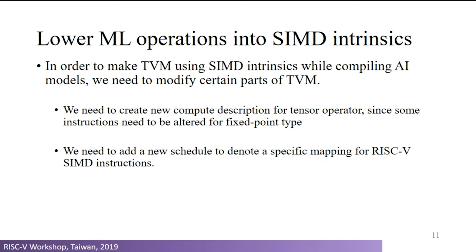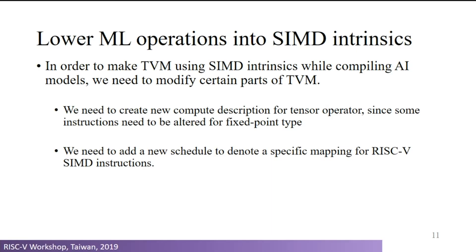The two primitives added in the second layer of optimization serve two functions. The first is fixed-point type conversion: since the P extension only has fixed-point and integer instructions, we have to convert most AI programs from floating-point to fixed-point type, and adjust the computation for each operator accordingly. The second primitive ensures we can schedule the operator correctly so that it can be lowered into the corresponding SIMD instruction.